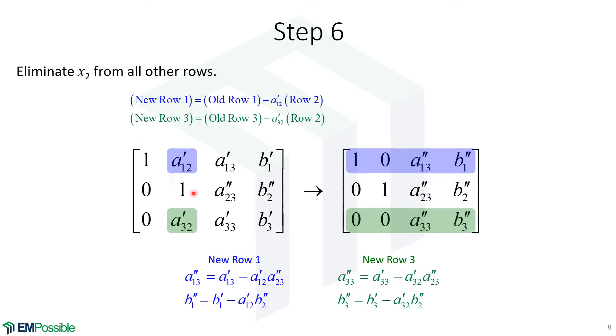Given now that we have a 1 in the diagonal position of the second row, it becomes easy to figure out what to multiply the second row by so that we can subtract that from the first and third row so that we get 0s in these two positions. The new row 1 is the old row 1 minus row 2 times the A12 prime. That puts a 0 in this position. The new row 3 is the old row 3 minus A32 prime times row 2. That puts a 0 in this position. Here's how we calculate those.